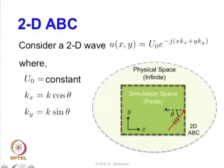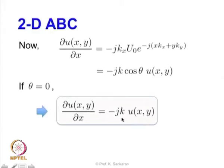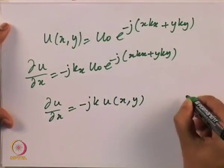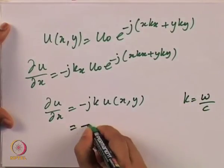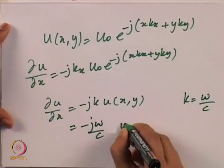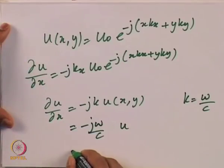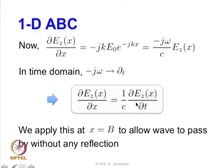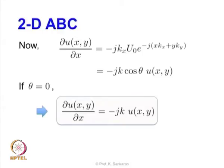This is the same as what we had in the case of 1D ABC. Substituting k = ω/c, we get du/dx = −j·(ω/c)·u, and since j·ω equals −∂/∂t, this becomes (1/c)·∂u/∂t. This is exactly the initial equation we had in the one dimensional ABC, which makes us confident that the formulation we have arrived at is the right equation for any angle theta. We can now compute the value of the reflection coefficient.